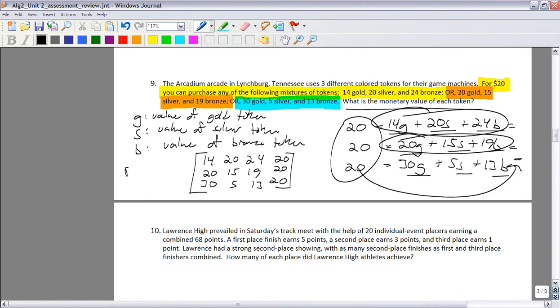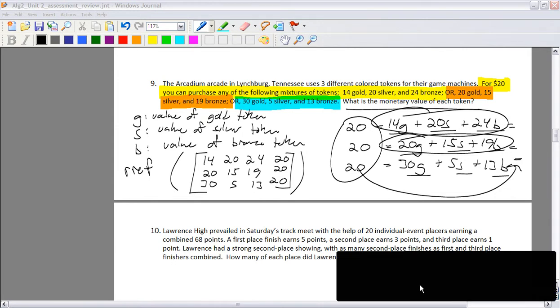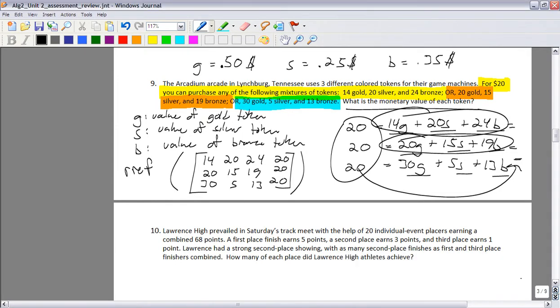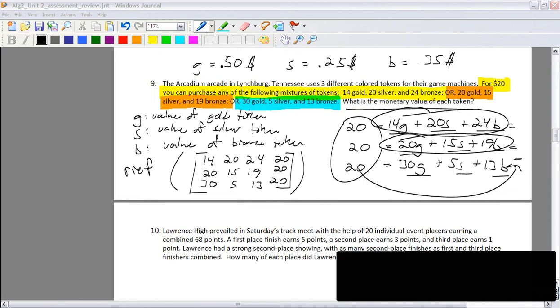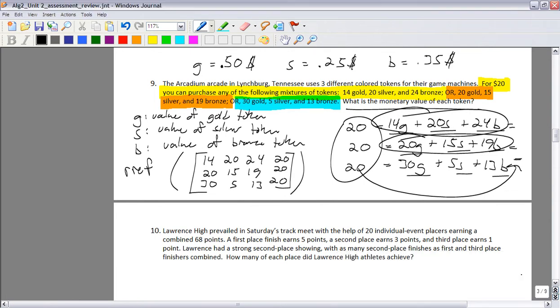So if I put that into a matrix, and I go reduced row echelon form, to that matrix, I end up with the values for G, S, and B. So I'll pause that, I'll put that into my calculator real quick. Okay, so I've got the gold coins as 50 cents a piece, silver is 25, and the bronze is 35. So, which seems kind of weird that the bronze would be worth more than the silver. So let me pause again and make sure I got this right. I'm going to check my matrix in my calculator. Okay, yep, so I checked my work again, and we're good. So moving on.